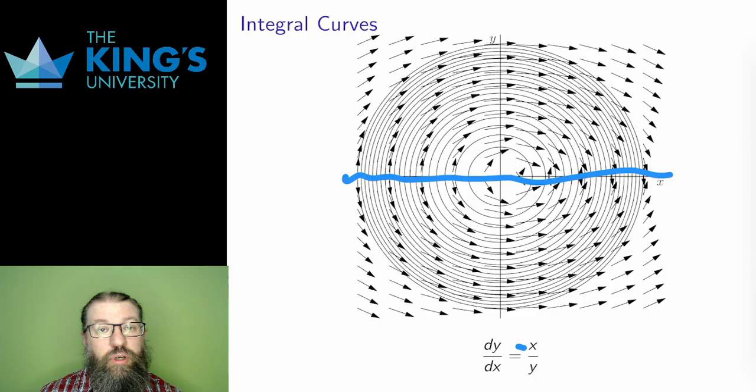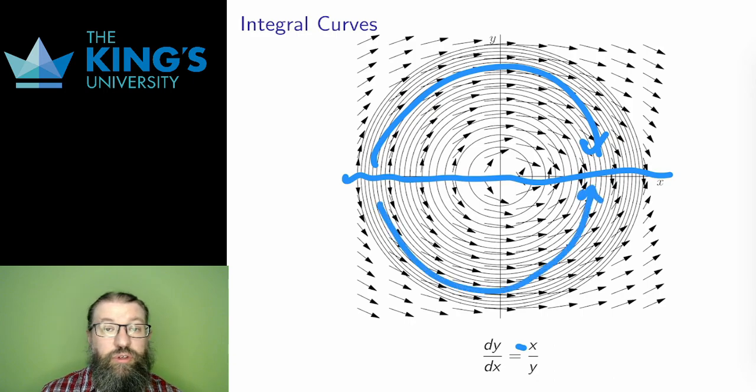Therefore, I know the behavior of the solutions. They grow, level off, and decay to 0 if they start above the x-axis, and vice versa, below the x-axis. They follow circles.